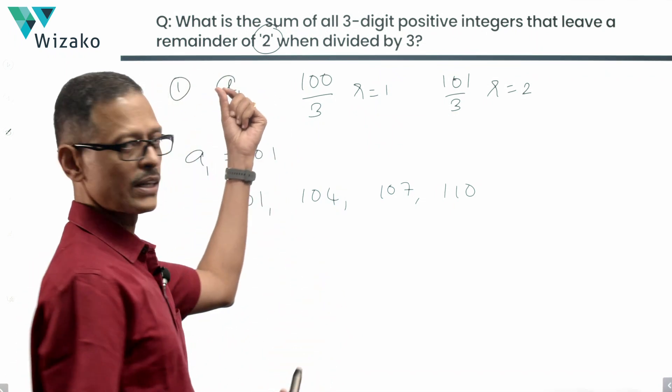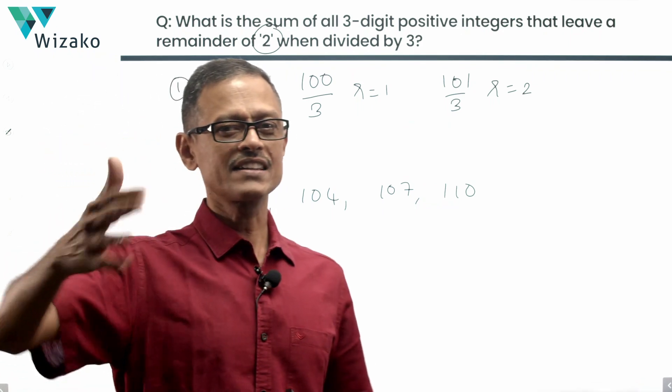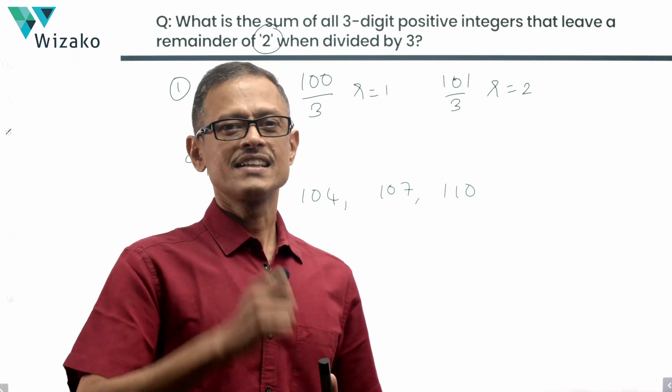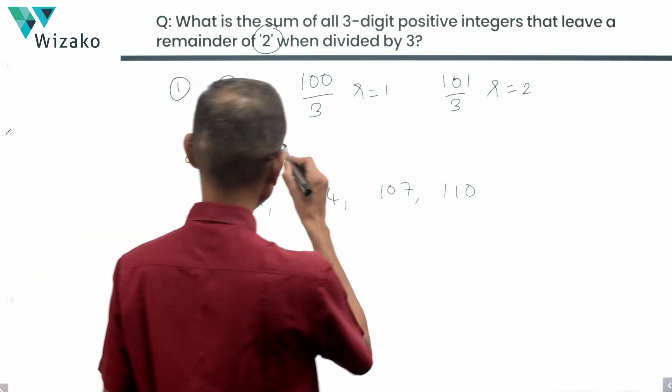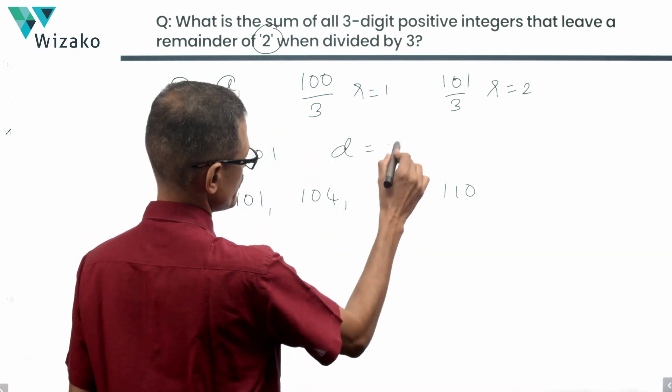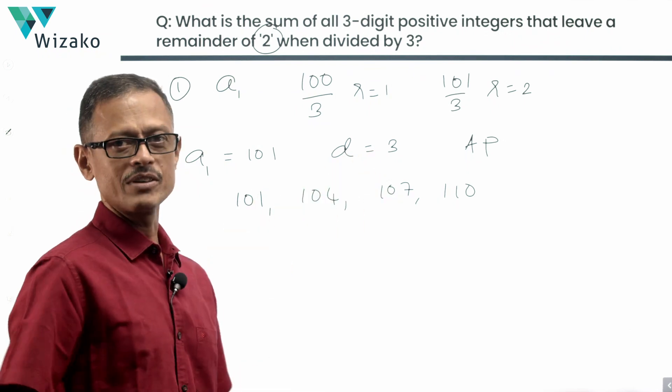So first step, we wanted to find out a1 and we did that. In the process, we went to the second, third, fourth term. We computed those terms and realized that these numbers are in an arithmetic progression with a common difference of 3. So we computed a1, we computed the common difference, and we know that this is in an AP. All of these have been established till now.